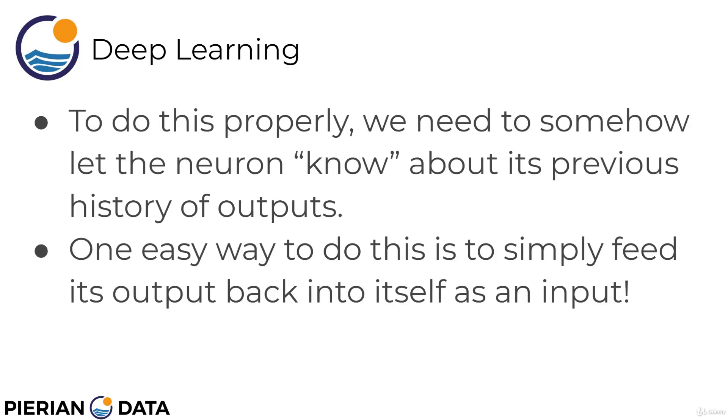So to do this properly, what we need to know is, we need to somehow let the neuron understand and know about that previous history of outputs. It can't just know the 6 to produce the 7. It needs to understand that there was 1, 2, 3, 4, 5, 6. So, how do we actually let it know about that history of its output? Well, one easy way to do this is to simply feed in its output back into itself as a new input along with the new input information.